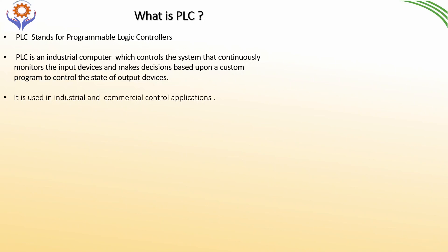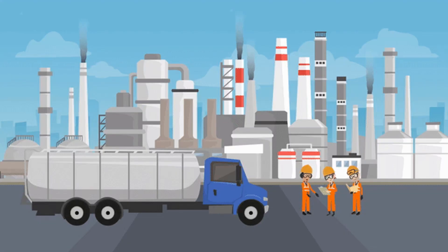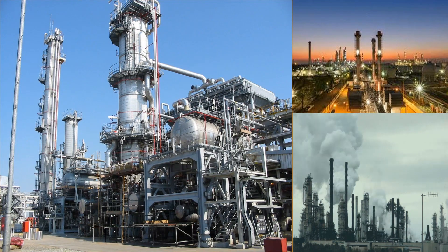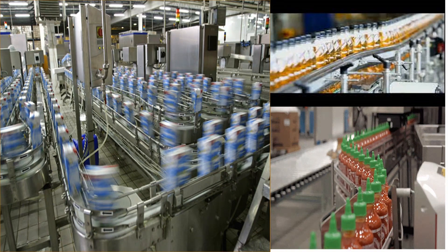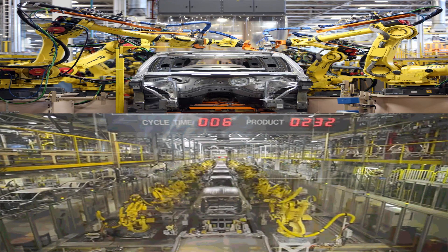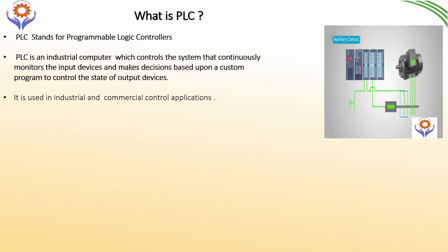Where are we going to use PLCs? PLCs are used in industrial and commercial control applications such as oil and gas plants, power and desalination plants, petrochemical industries, food and beverage industries, water and wastewater industries, manufacturing industries, and many other sectors like metal industries, cement industries, chemical industries, nuclear plants, robotics — everywhere we are using PLCs.